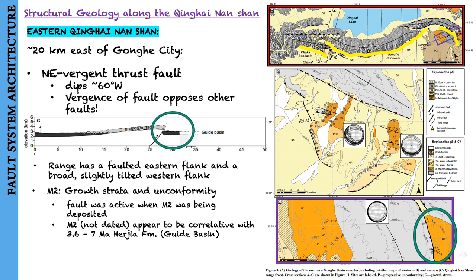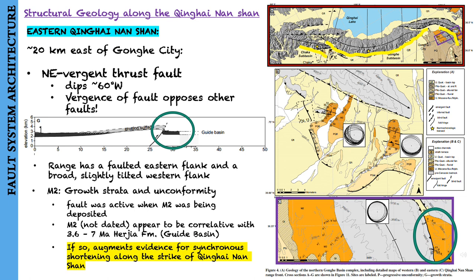Although these M2 deposits have not been dated directly, they appear to be correlative with the 3.6 to 7 million years ago Herjia Formation strata in the Guida Basin to the east. If this is correct, it augments evidence for synchronous shortening along the strike of the Qinghai-Nanshan.